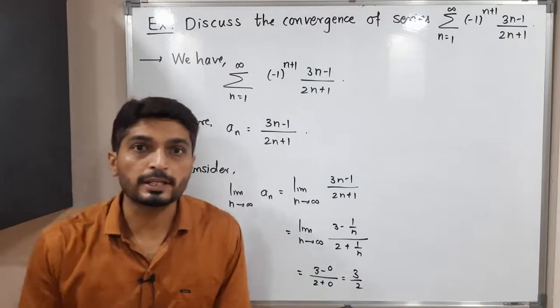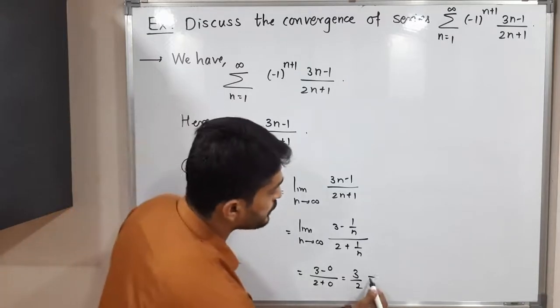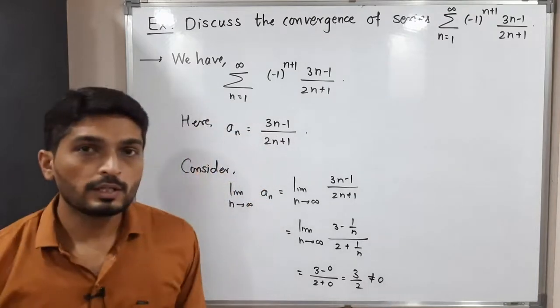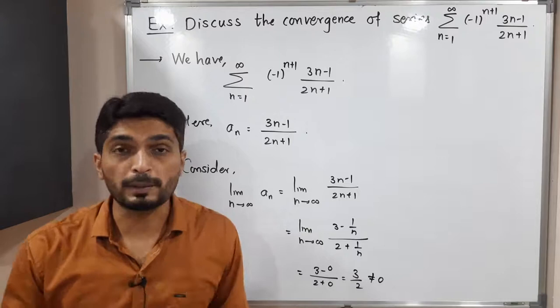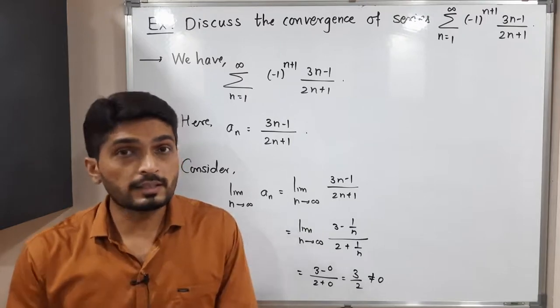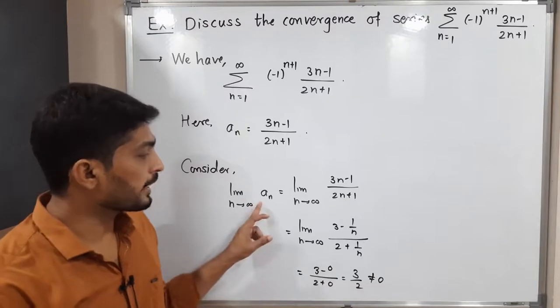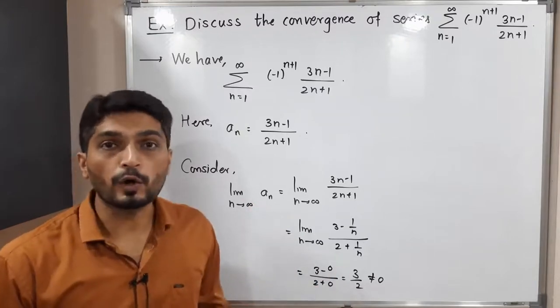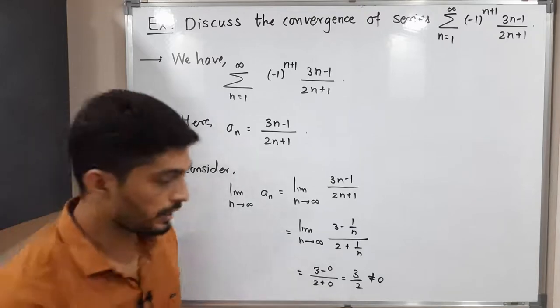Actually, we were expecting to have 0 here, but we are not getting 0. So I should mention here, limit is not equal to 0. That result we have already proved at the beginning of this topic. So that result is, if you have any convergent series, then limit of a_n must be 0, but we are not getting that. So directly we can say this given series is divergent series.